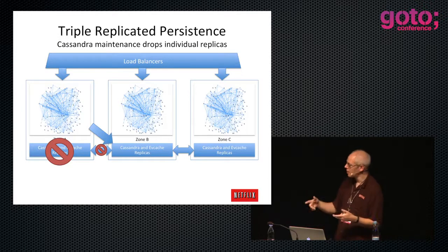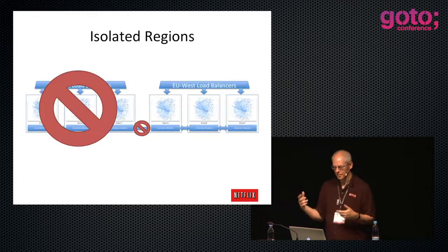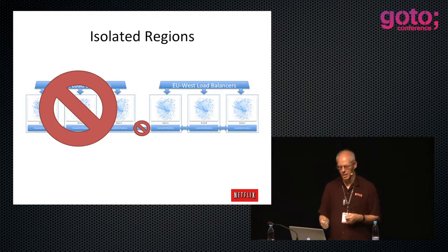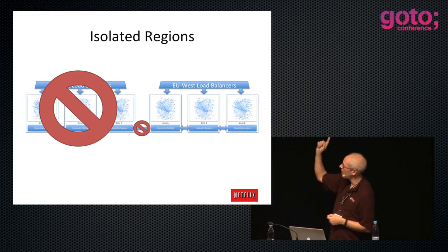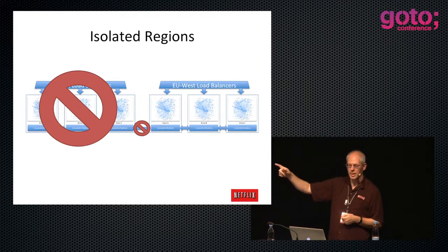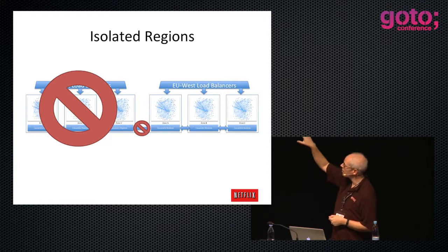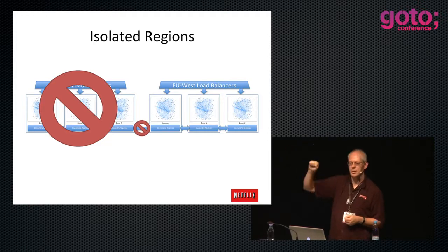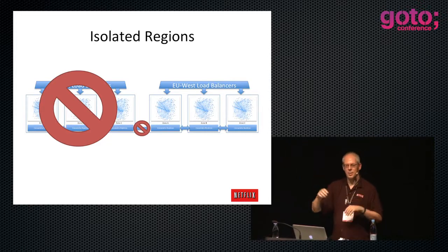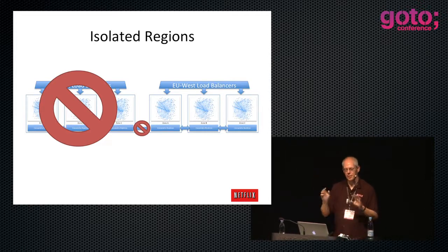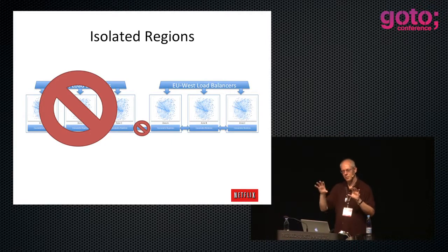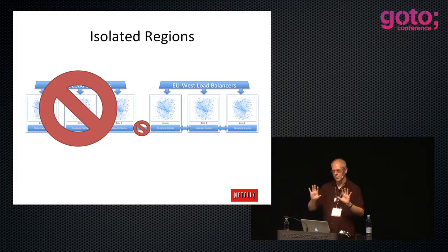We have US and Europe, and it's a clone - six complete copies of all our data, six batches of every service, but traffic from Europe goes to the right and traffic from the US goes to the left. Something like a 10-to-1 ratio right now, although the European site is growing proportionately faster, so that ratio is decreasing.